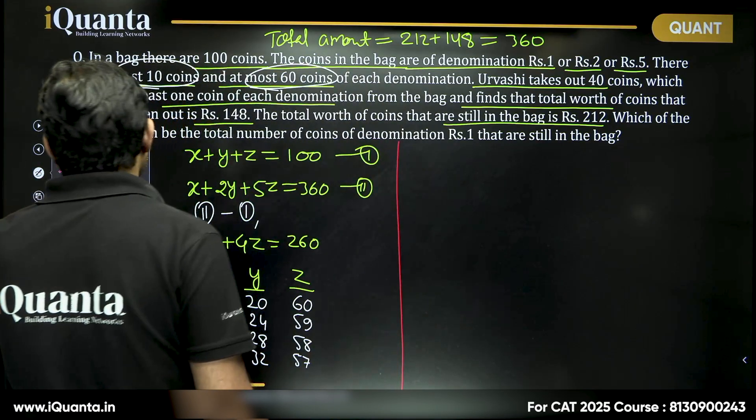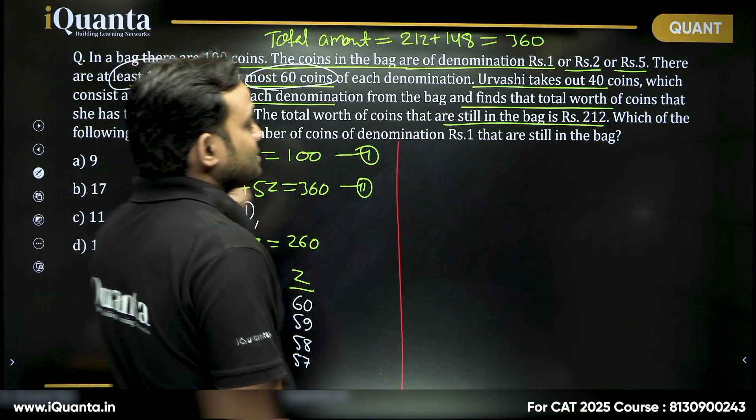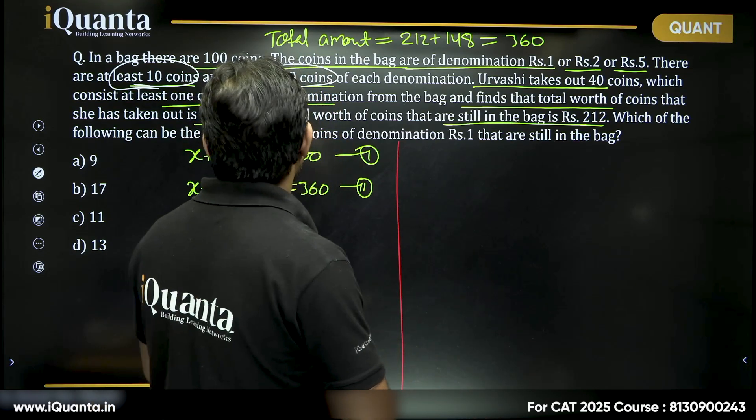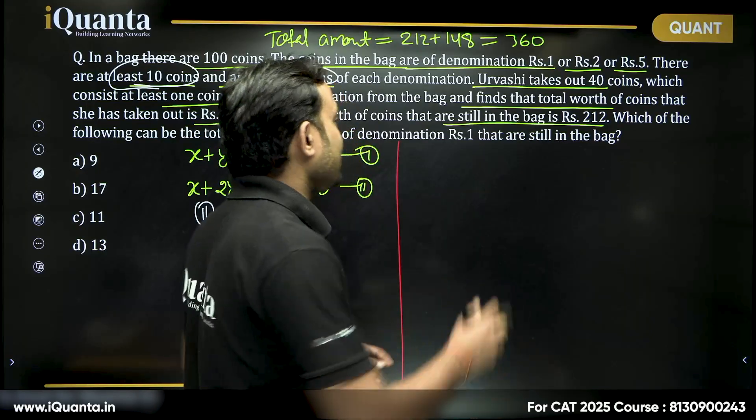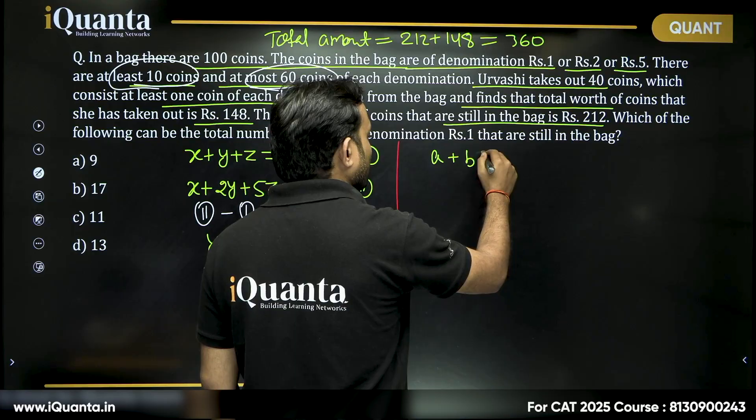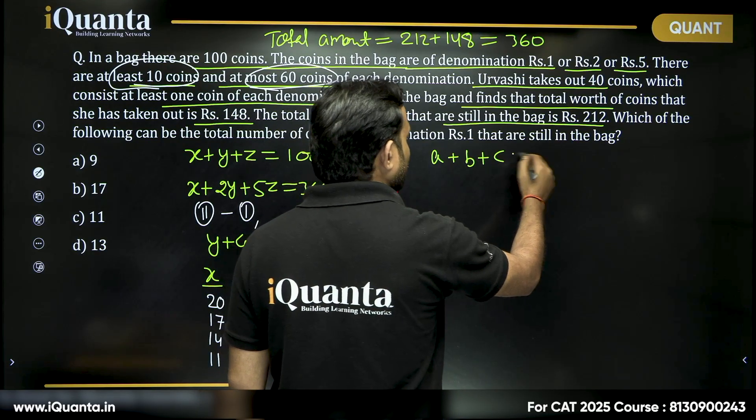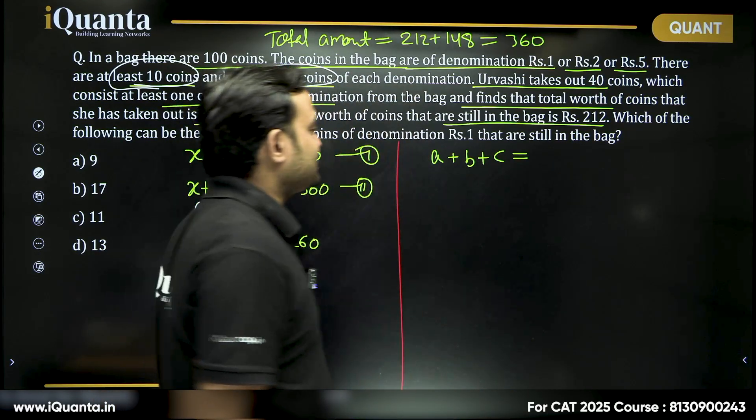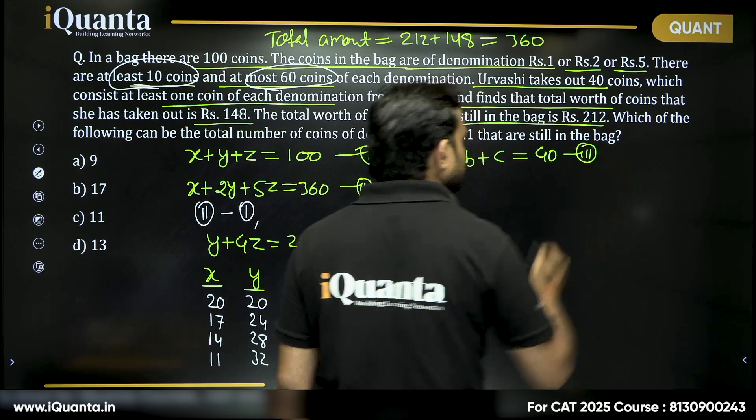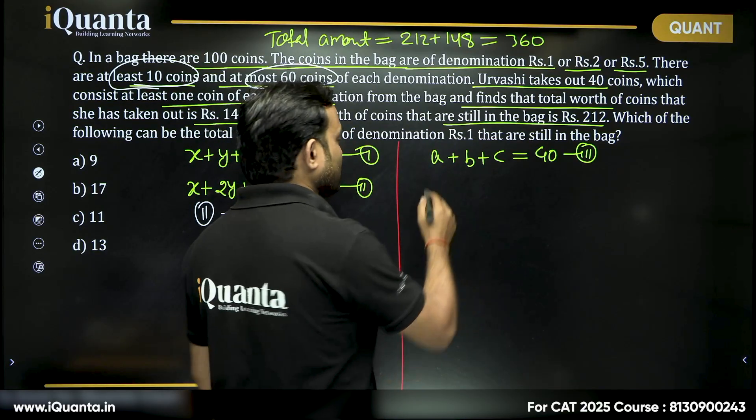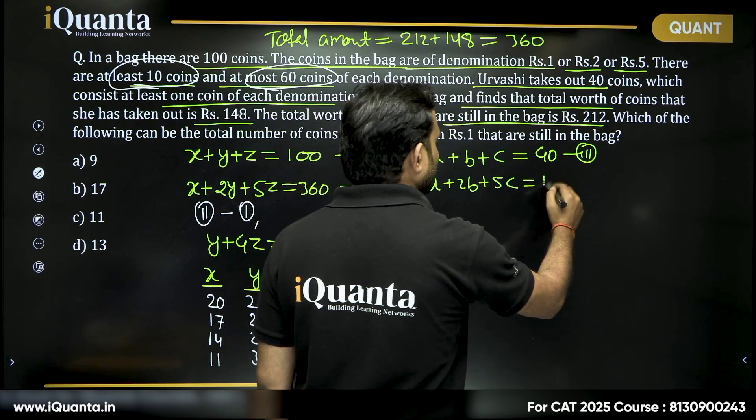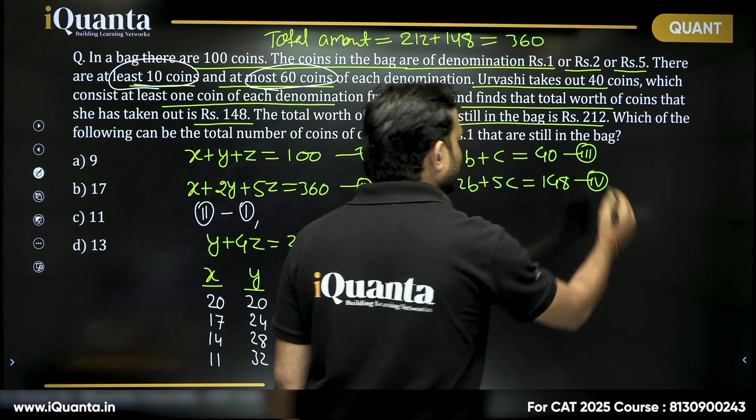Now she is taking out at least one of each coin and total is 40 coins and total value is 148. So let us say in this case number of one rupee coin is a, number of two rupees coin is b and number of five rupees coin is c and total number of coins should be 40. Let us say this is our equation three. What will be the total value? A plus 2b plus 5c is equal to 148. This is our fourth equation.